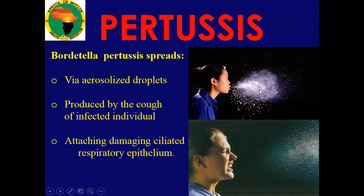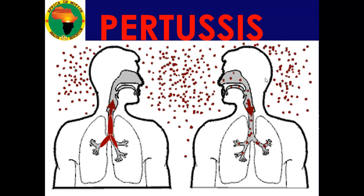Pertussis is spread by coughing or sneezing. We call it an airborne disease, transmitted via aerosolized droplets. Those small droplets, though you don't see them, can move from one person to another. Once attached to the epithelium of the respiratory tract, the bacteria start causing disorders of respiratory function. If an infected person coughs, a person in close proximity can breathe in and acquire the infection.